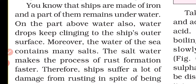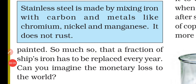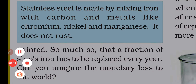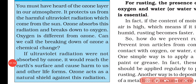Stainless steel is another material that can prevent rusting. If we mix iron with carbon and metals like chromium, nickel, and manganese, it will not rust, and that type of metal is known as stainless steel. We can use this steel for making different types of items that can easily resist rusting.